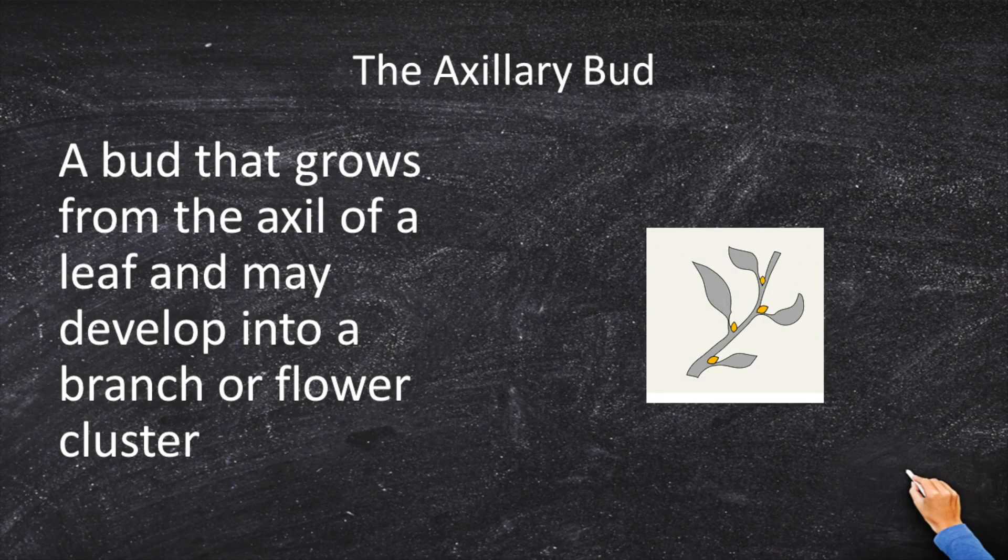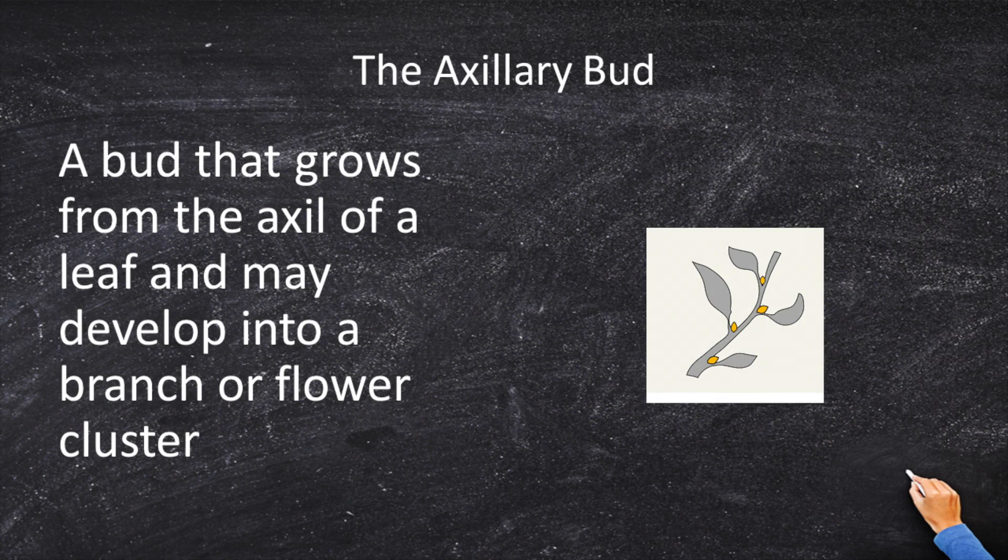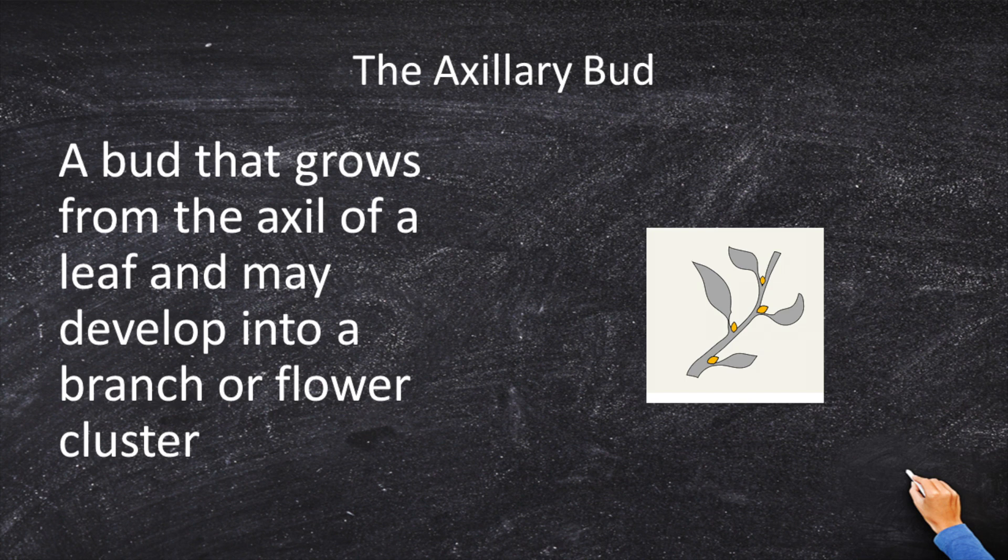Next, let's do the bud. Axillary bud. I don't know what axillary means, but I know what auxiliary means. But enough of my guessing. Let's read the definition. Axillary bud. A bud that grows from the axle of a leaf and may develop into a branch or flower. So when I say axillary bud, you say bump. This has not turned into anything yet. So there is no leaf connected to it. It's just a bump.